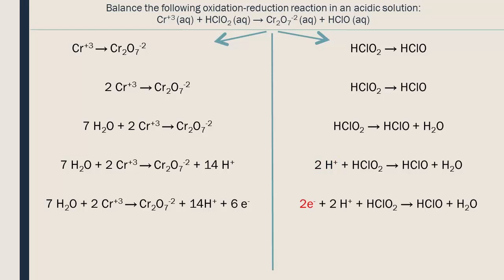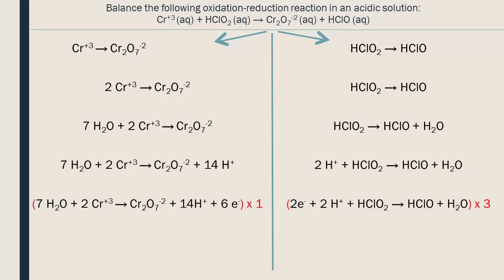Now both half reactions are balanced. To be able to put the half reactions back together, they need to have the same number of electrons. To do this, we multiply one or both of the reactions by the lowest whole number possible. Here, we have 6 electrons in the first reaction and only 2 in the second. But by multiplying the second reaction by 3, the numbers of electrons become equal. The electrons can now cancel out.